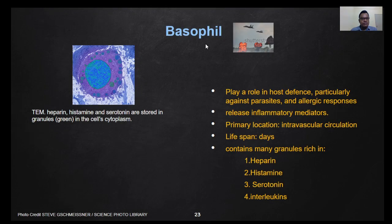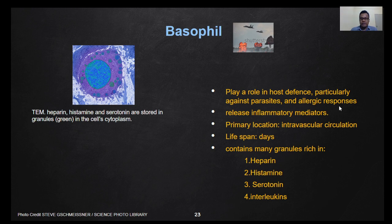Next, we have basophils. This is a transmission electron microscope image. We can observe heparin, histamine, and serotonin stored in the granules shown in green color inside the cytoplasm. Basophils play a big role in host defense, particularly against parasites, and also play a major role in allergic responses by releasing inflammatory mediators. They are located primarily in the blood and their lifespan is within days. The granules are rich in heparin, histamine, serotonin, interleukins, and a few others.